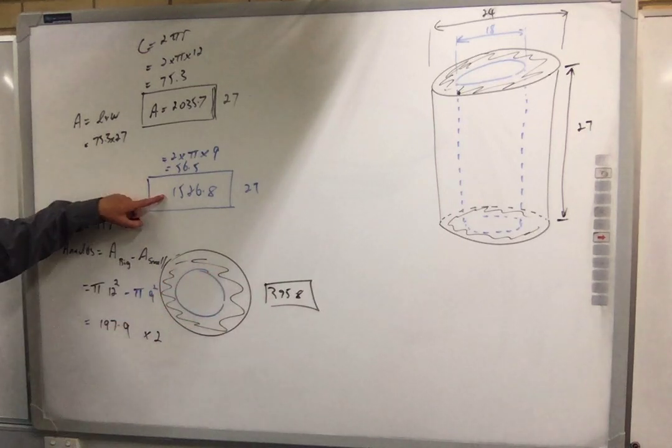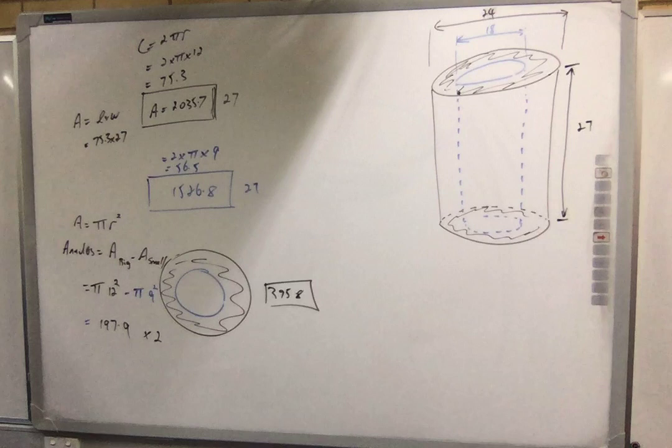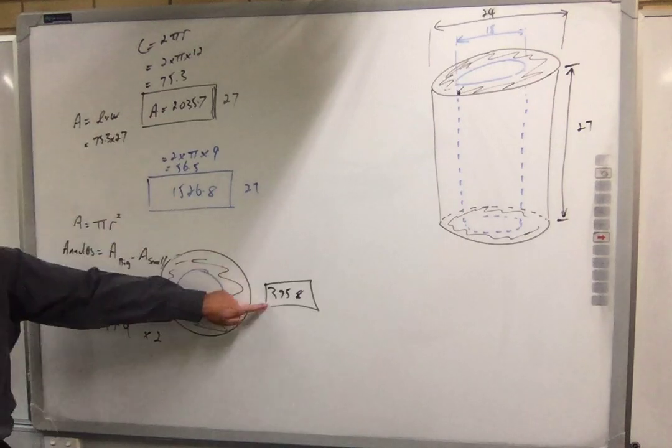That's the inside area, and that's the outside area. So all together, what would we do? Add them. Can you add that, that, and that?